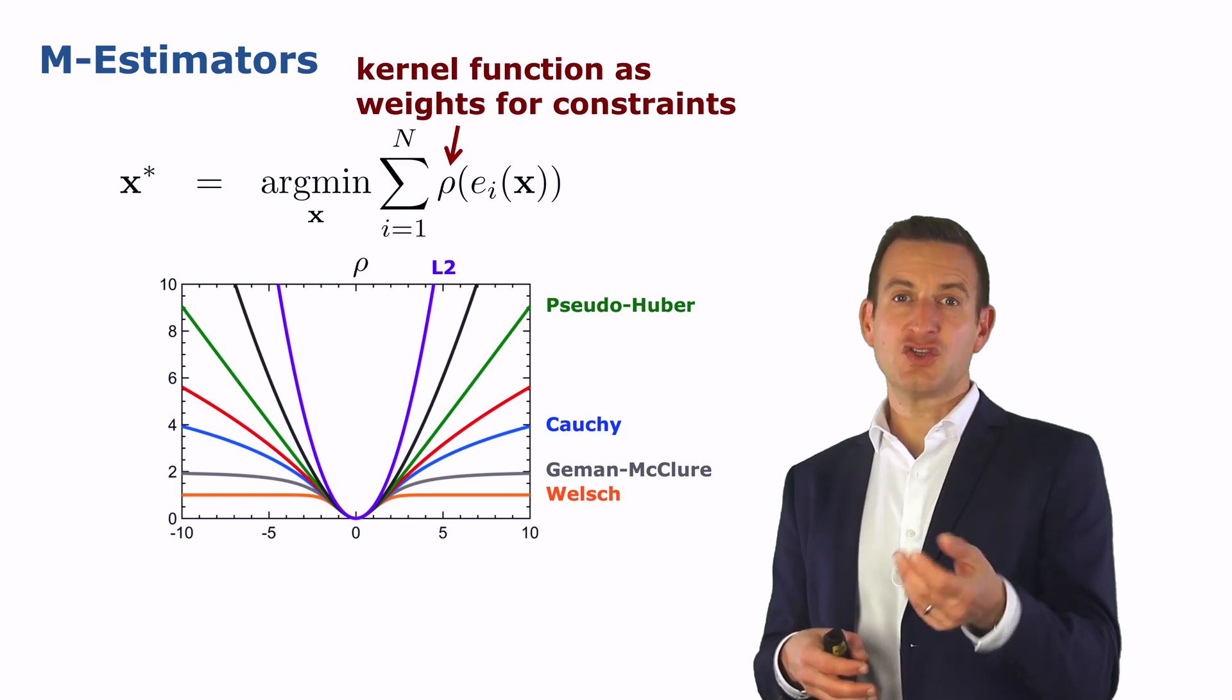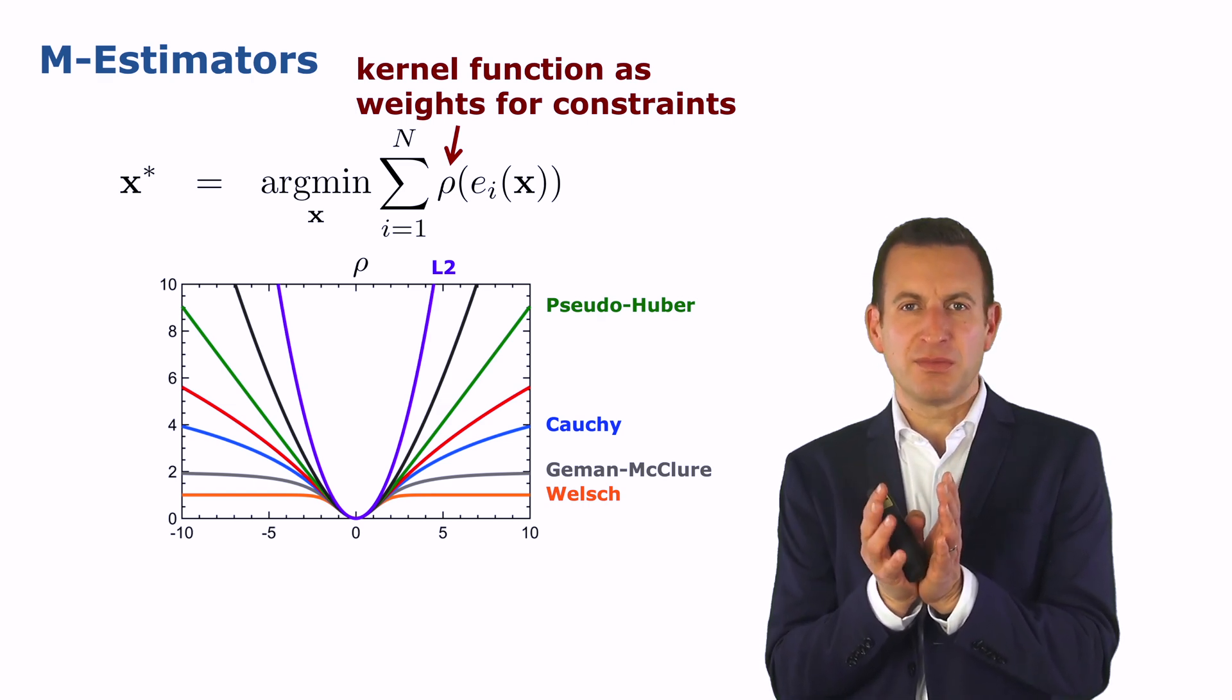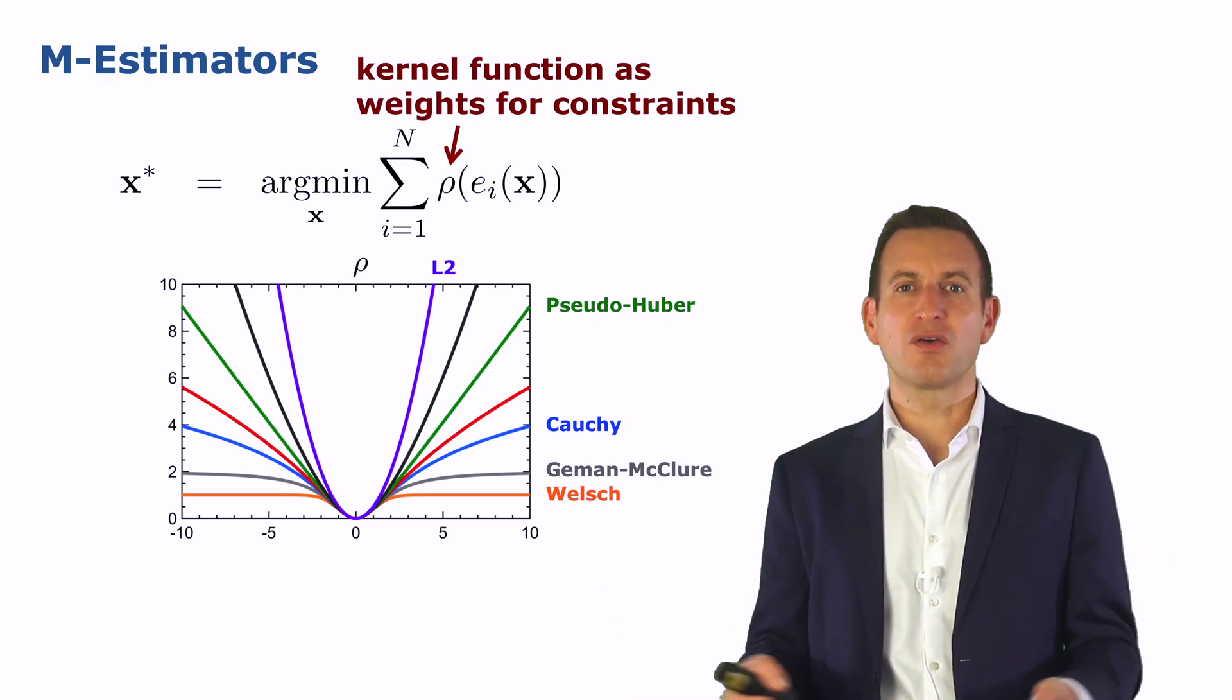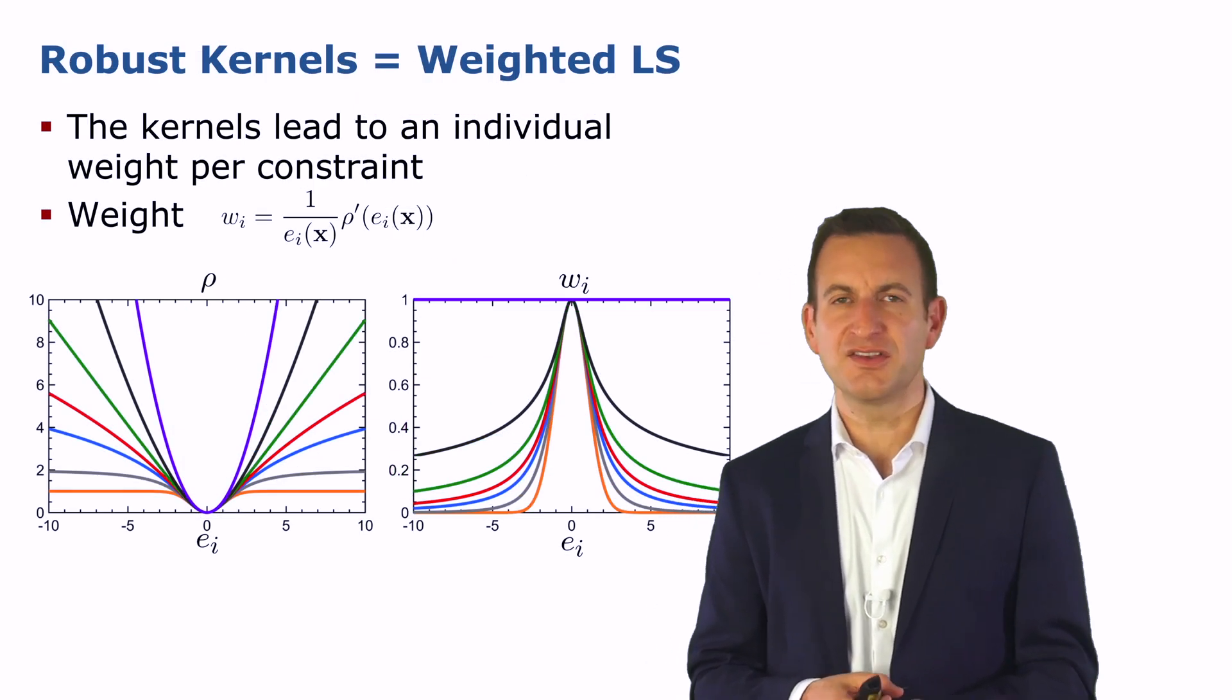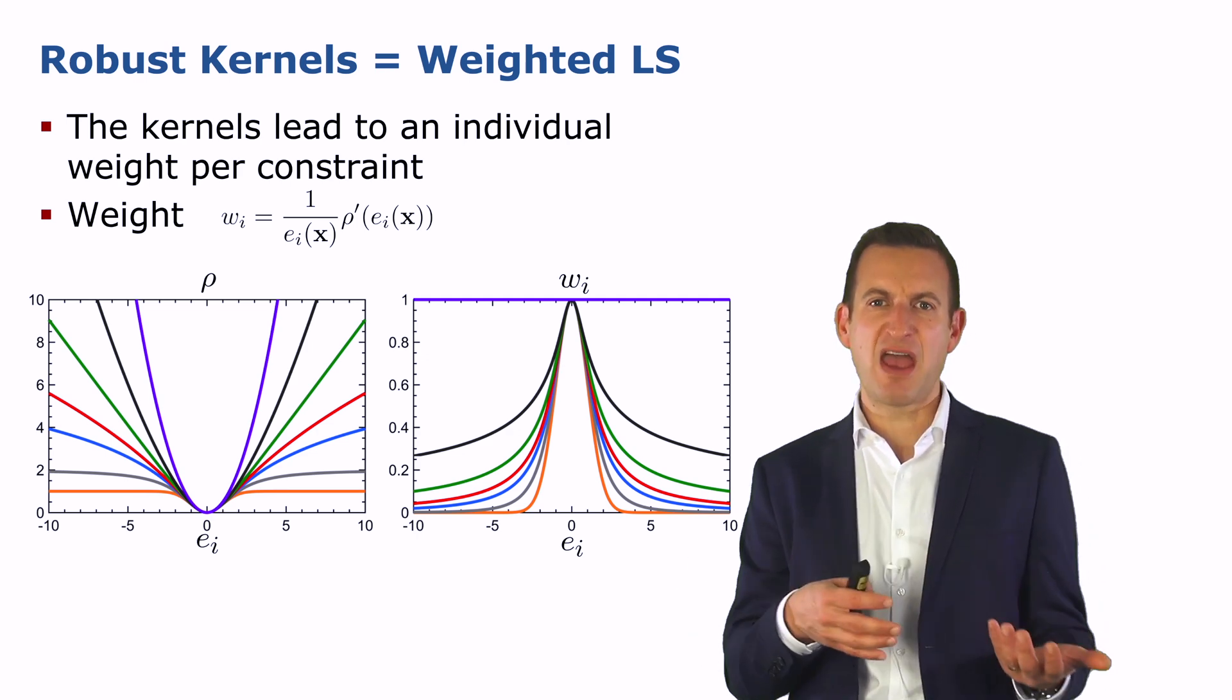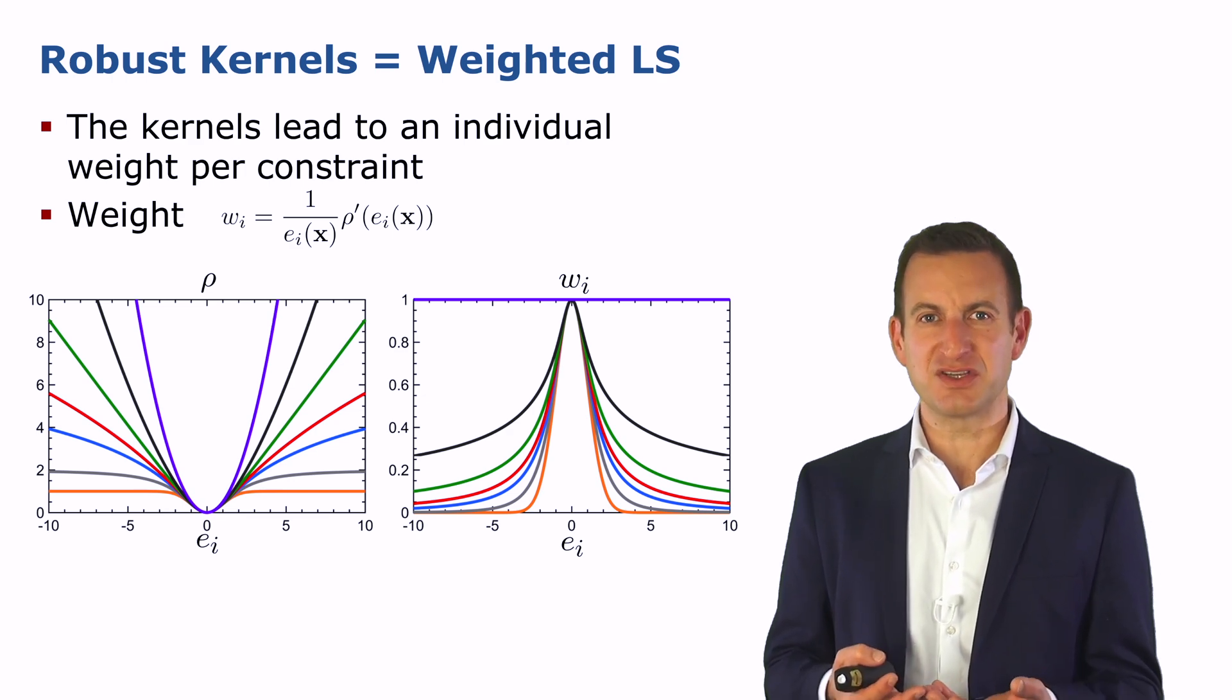And the key idea is that we can basically choose one of those robust kernels, which basically means if we are close to a zero error configuration, we basically have a least squares problem. And if we are far away, we are in a problem where the effect of those bad constraints or wrong constraints is substantially downweighted. And the key insight in here is that these robust kernels can be used as a weighted least squares problem. That means we don't need to change the math behind it. We can use a different function than the squared error function. The only thing we need to do, we need to add an additional weight to the minimization term.